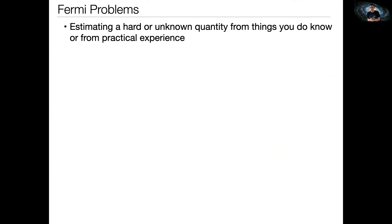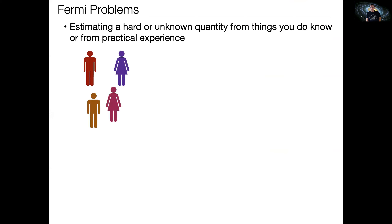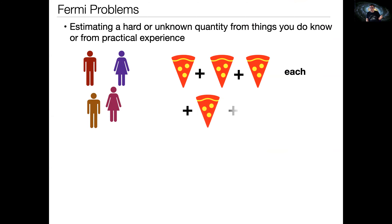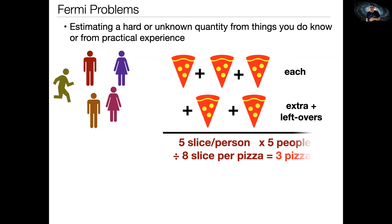All of you do Fermi problems all the time. As an example, imagine we're all out of stay-at-home orders and we decide to have a pizza party. You estimate each person is probably going to eat about three pieces, a few will eat four, you want some for breakfast tomorrow, and there's always the one late friend. So you assume five slices per person, five people—that's 25 slices. Divide by eight slices per pizza: you need to order about three pizzas.